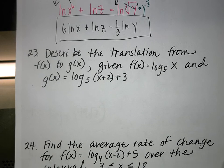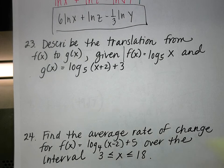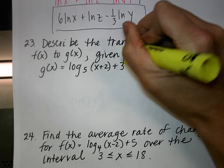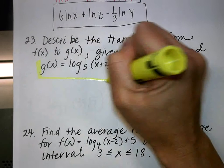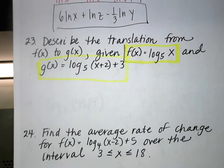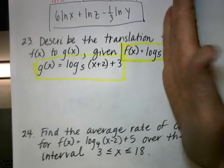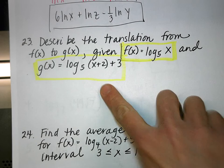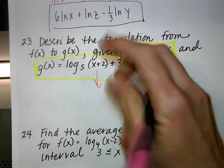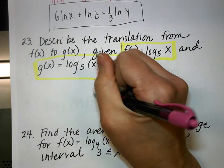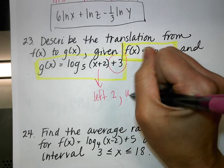Number 23: Describe the translation from f(x) to g(x). f(x) has no translation. For g(x), set the inside expression equal to zero — we get negative 2, so on the x-axis we move left 2. At the end there is a +3, so on the y-axis we move up 3. The translation is left 2 and up 3.